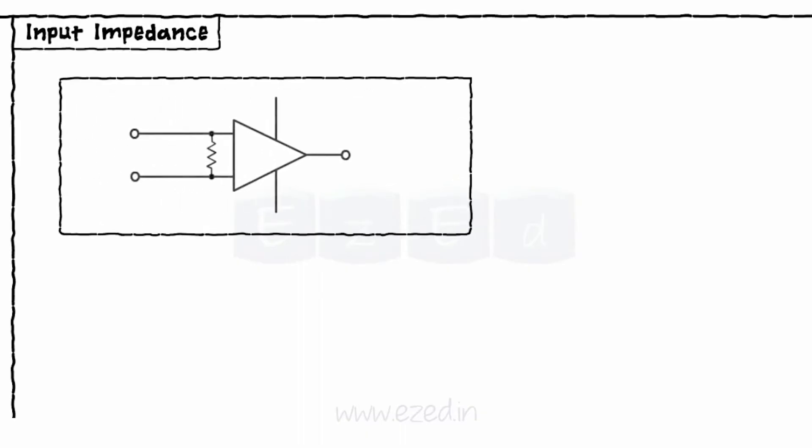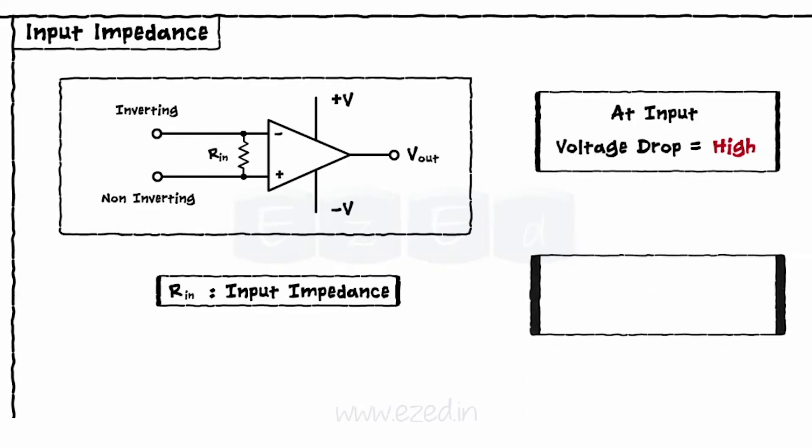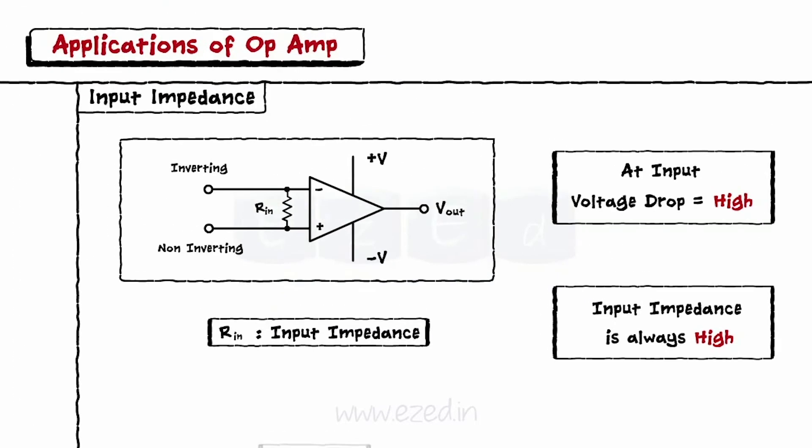The second term is input impedance. The resistance offered by the input terminals of an Op Amp is called input impedance. The voltage drop at the input of an Op Amp must be very high. Hence, the input impedance of an Op Amp is always very high due to the equation V equals I into R.